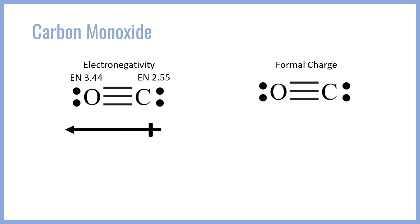On the other hand, if we look at formal charges and calculate them for the CO molecule, we find that oxygen carries a formal positive charge and carbon carries a formal negative charge. In that case, the dipole moment arrow would actually point towards the right — towards the carbon — which is the opposite direction from what electronegativity predicts. This suggests a strong dipole in that direction, since these formal charges are irreducible; we can't fold them into any extra double bond — they're just stuck there.